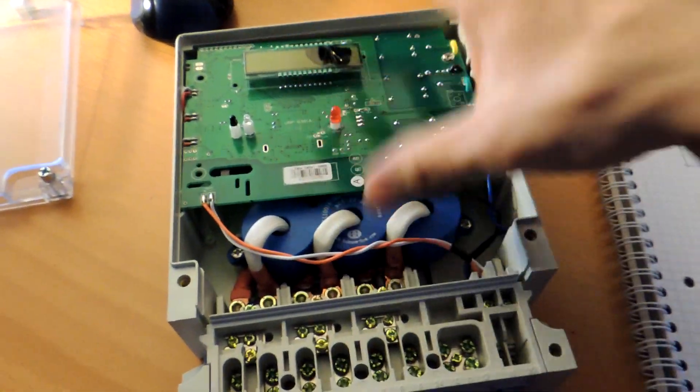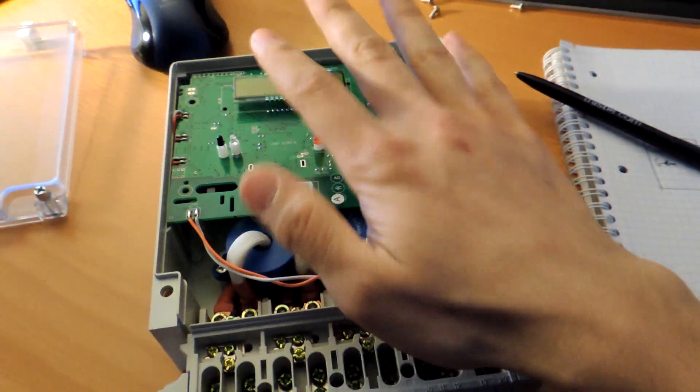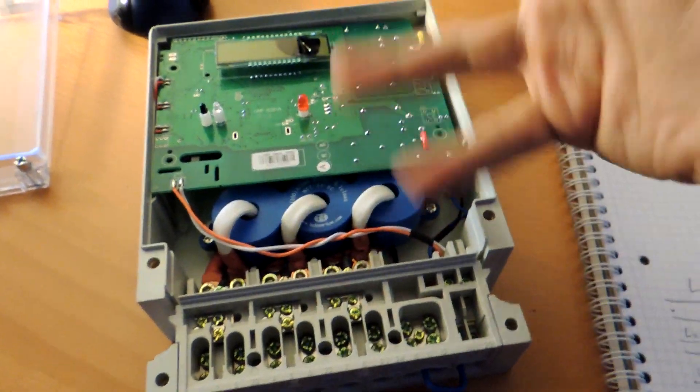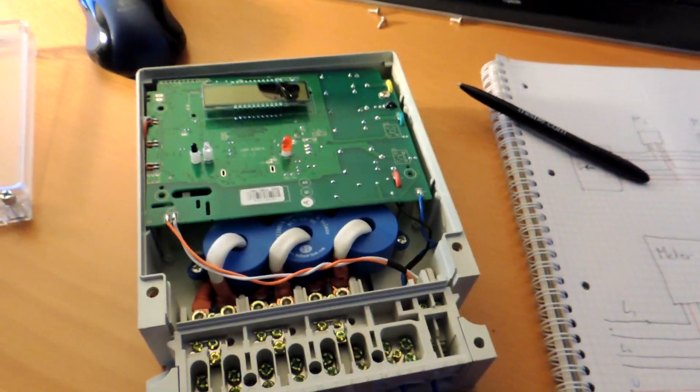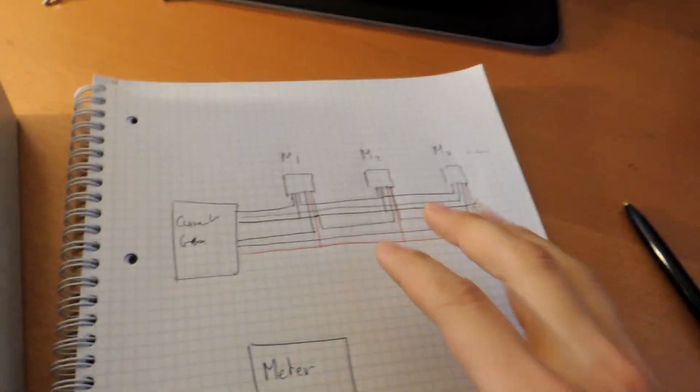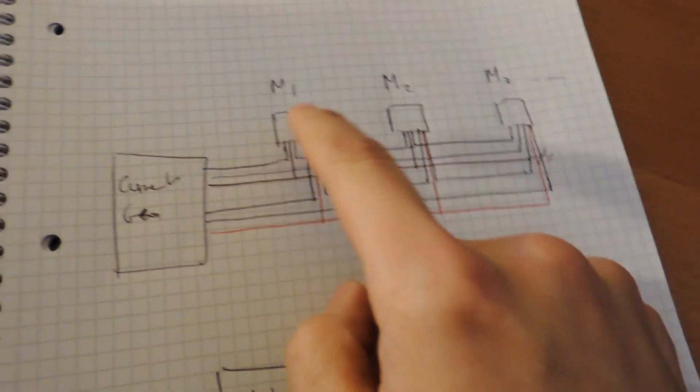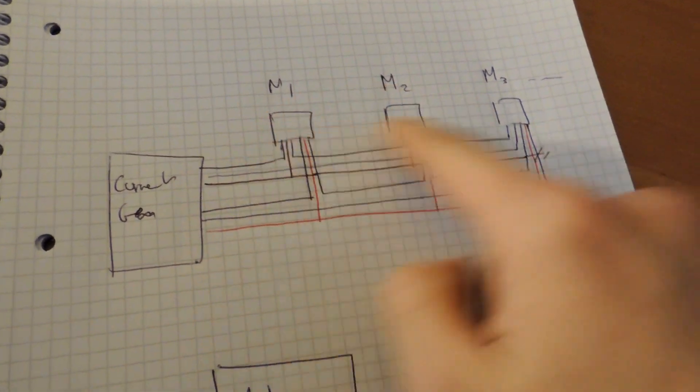So each year they take meters and they put them on the calibration bench to test them with reactive currents, all sorts of currents. So what they do here, I've got the bench there, so the meters are in series.